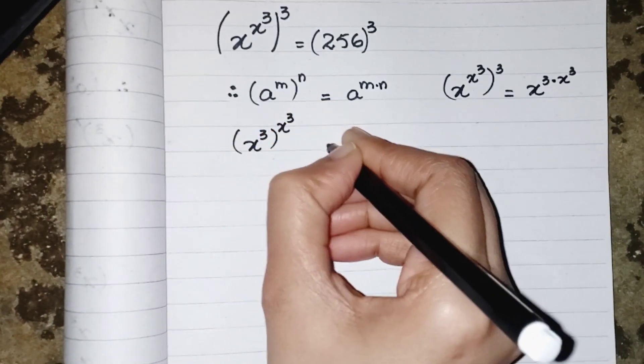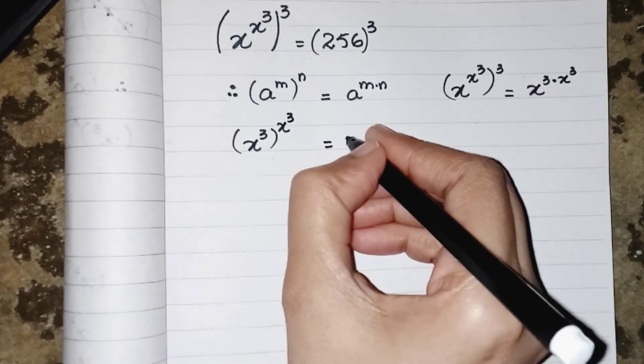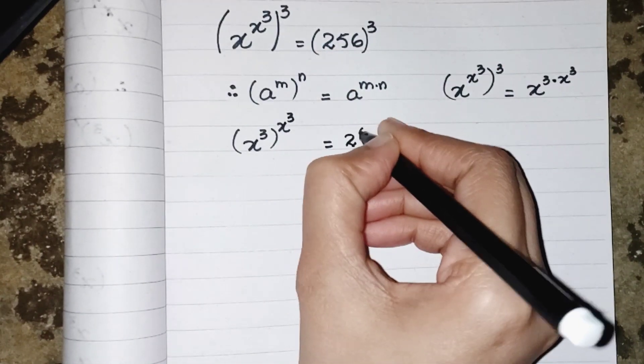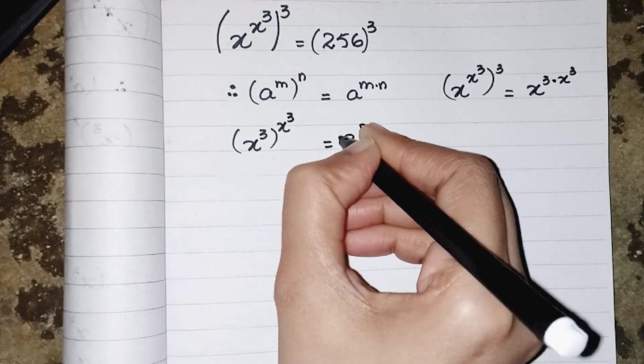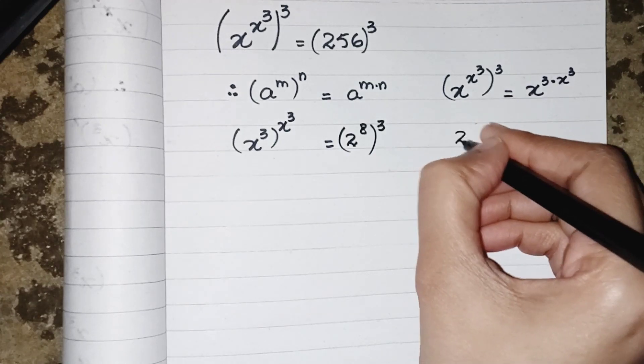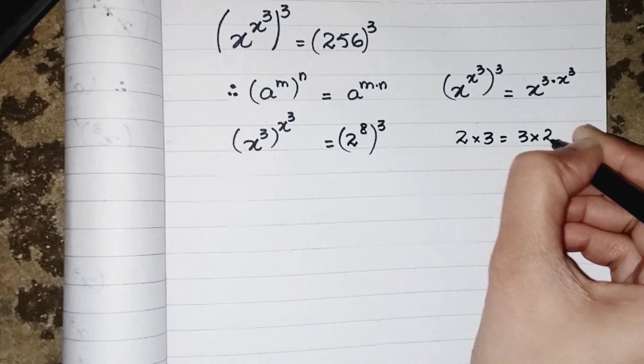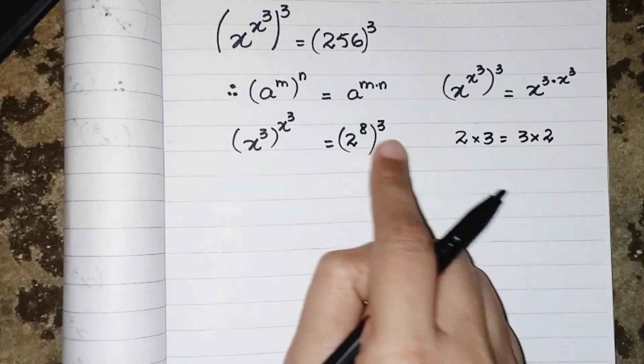We know that when 2 multiplied by 3 equals 3 multiplied by 2, both are same. So we are just swapping the powers to make it equivalent: 2 to the power 3 and over power 8.